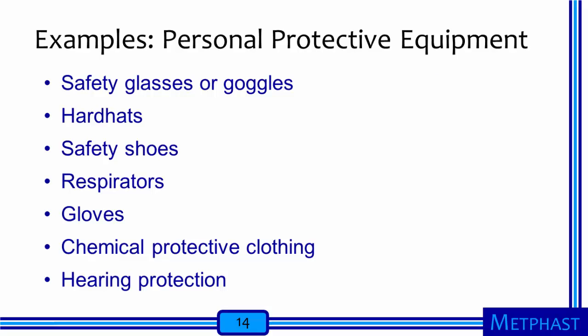Finally, lowest on the hierarchy of control is personal protective equipment. Examples include safety glasses or goggles, hard hats, safety shoes, respirators, gloves, chemical protective clothing that can cover the entire body, and hearing protection. We're not going to spend time on hearing protection in this lesson, but it's certainly an important example of PPE.